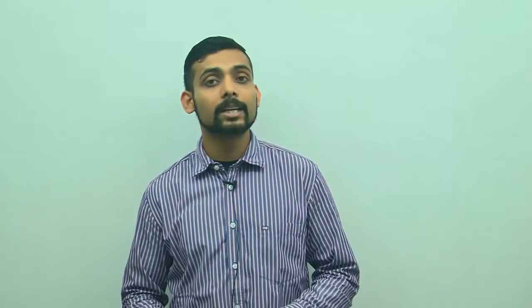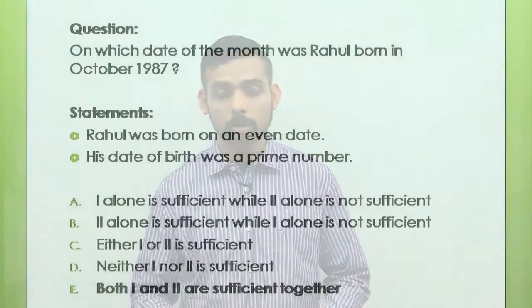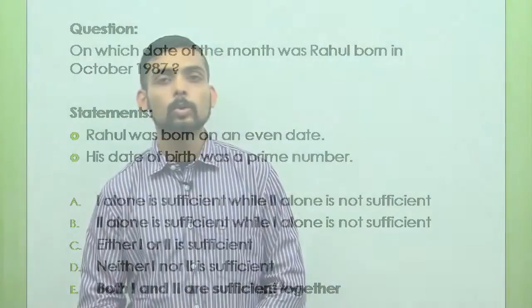So using both these statements together, I can answer this question, and the date of birth will come out to be 2nd October. Again, I need not answer the question but I have to say whether it can be solved or not. So I will go ahead and select option E — that both statements 1 and 2 are sufficient together.